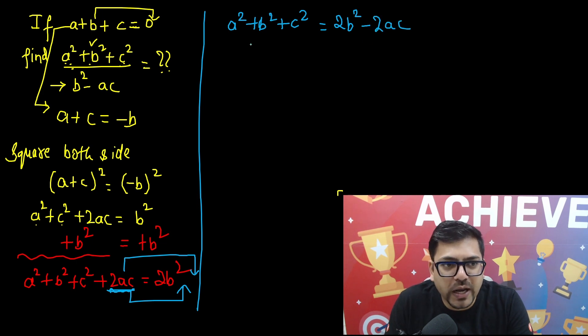So from here you are able to see that we needed b square and ac. We got 2b square and 2ac, so we can take 2 common. So if I take 2 common, what remains is b square minus ac.